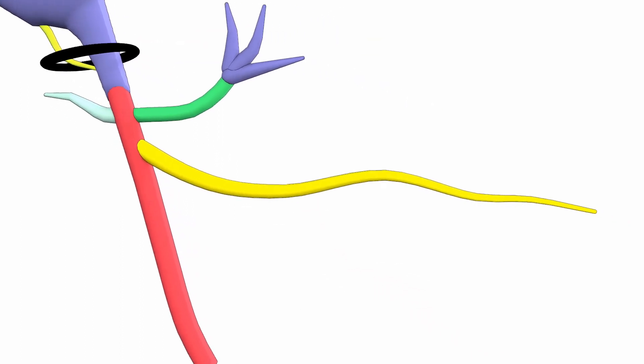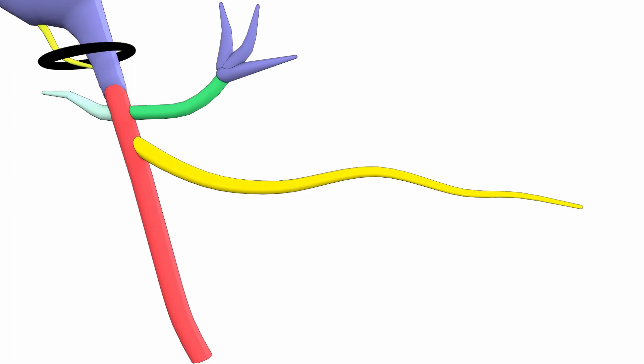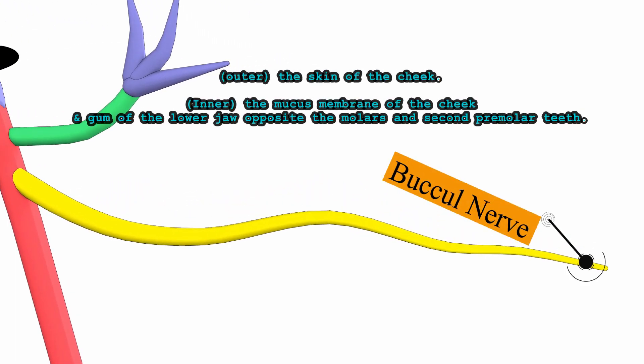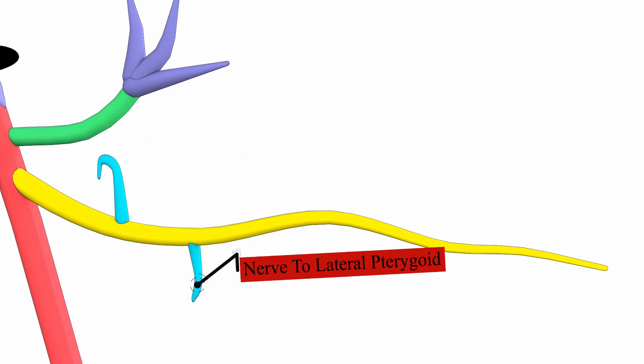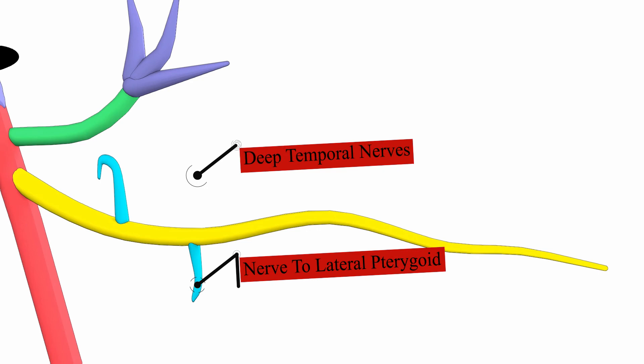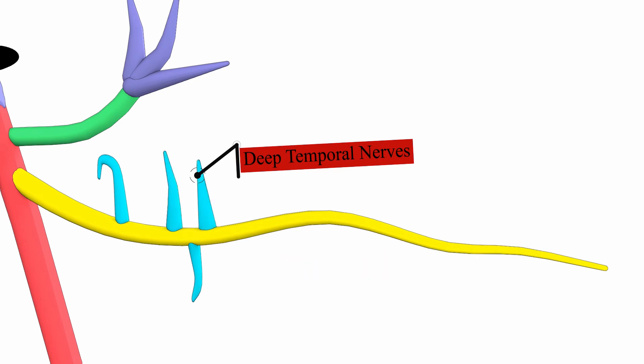The anterior division gives the buccal nerve, a sensory nerve supplying branches to the skin of the cheek; it pierces the buccinator muscle and supplies the mucous membrane of the cheek and gum opposite the molars and second premolar teeth. It also gives the masseteric nerve supplying the masseter muscle, the nerve to the lateral pterygoid supplying the lateral pterygoid muscle, and the deep temporal nerves supplying the temporalis muscle.